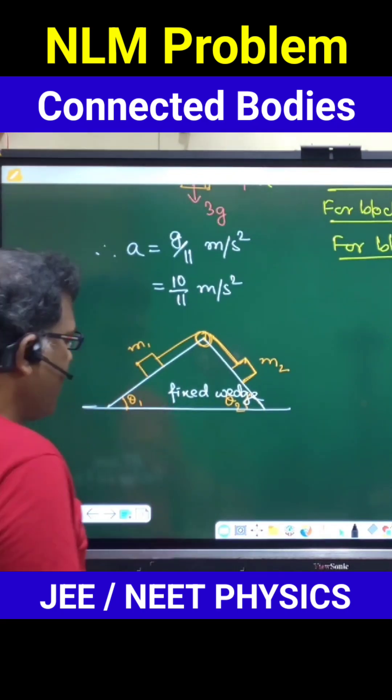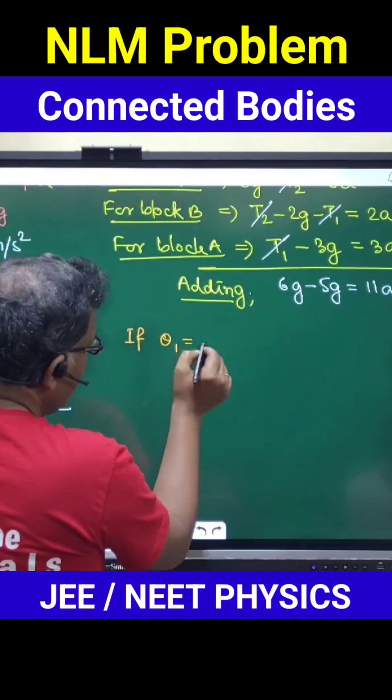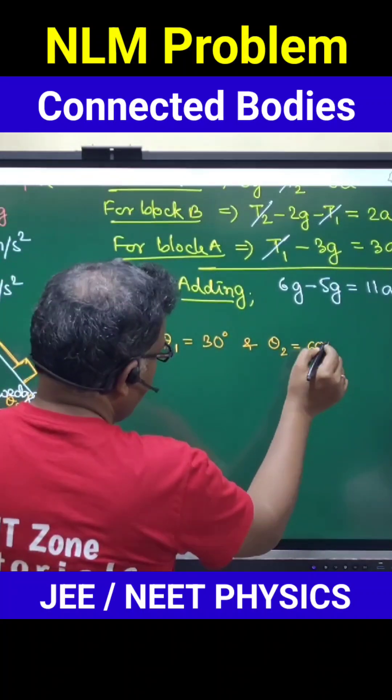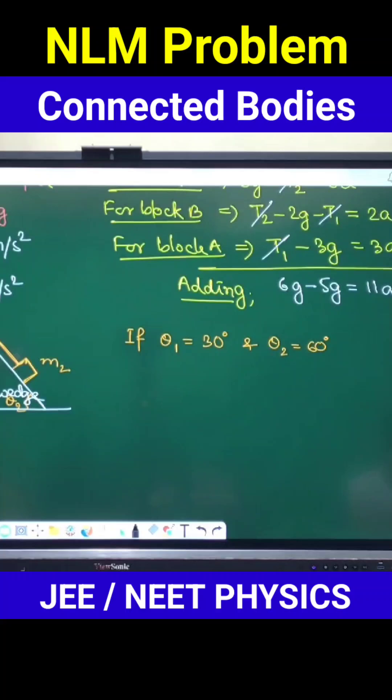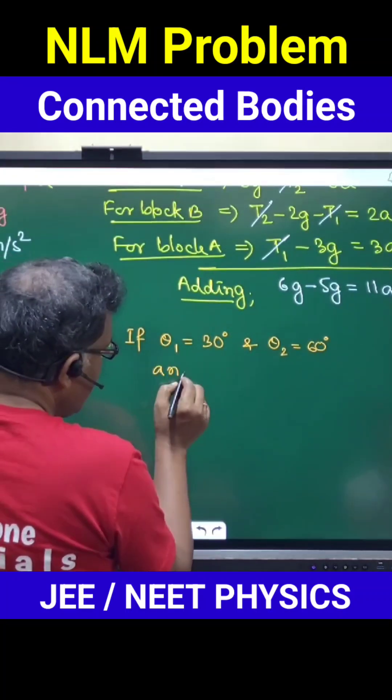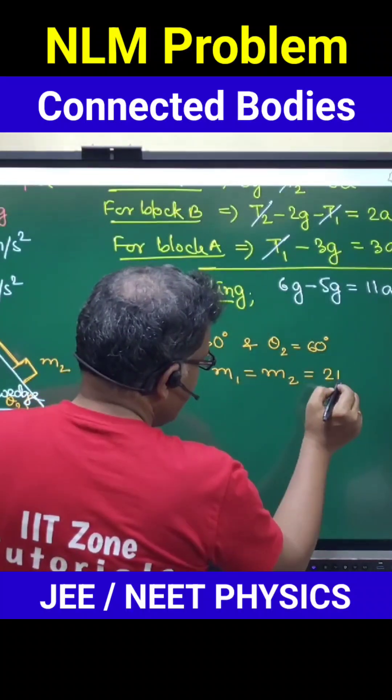For example, if we consider theta 1 is taken as 30 degrees and theta 2 is taken as 60 degrees. Even though if we consider m1 is equal to m2, let it be 2 kg each.